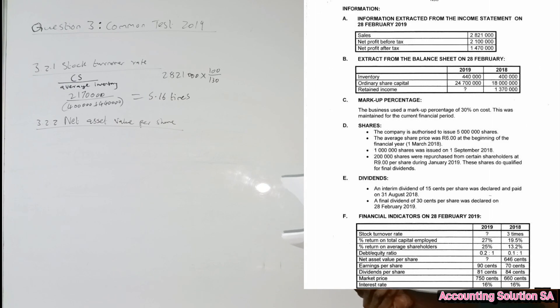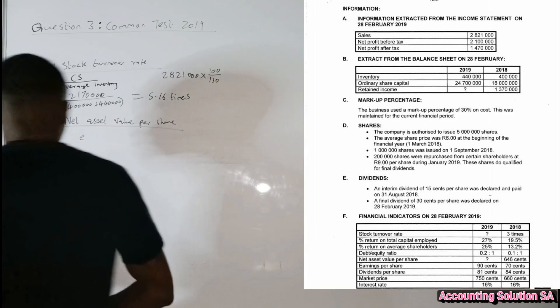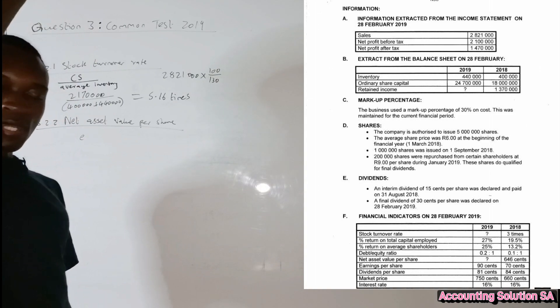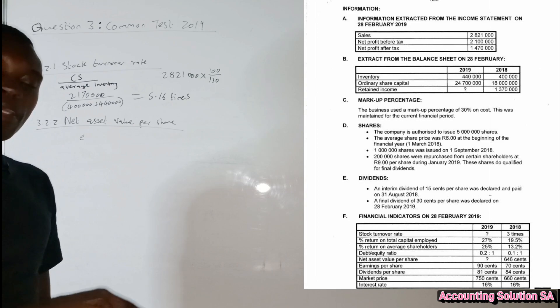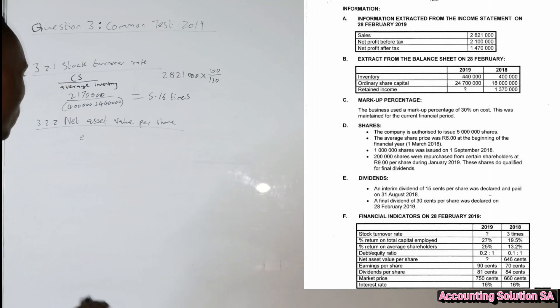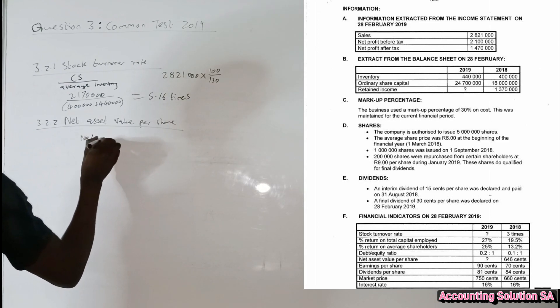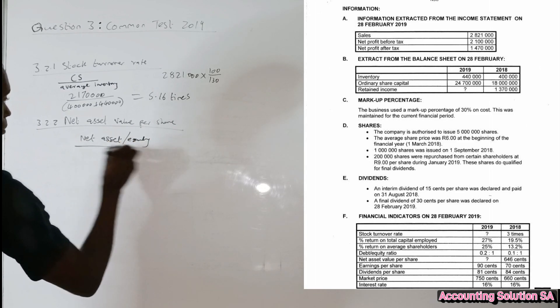Number two, net assets value. Net assets value is equity divided by number of shares. Equity is the same as net assets. Net assets, total assets minus total liability, is gonna give us equity and it's the same as net assets. You can also use the words net assets but it's the same, net asset or equity, divided by number of share issued.